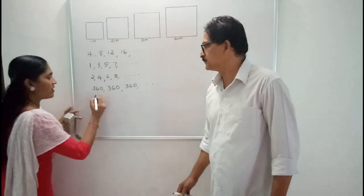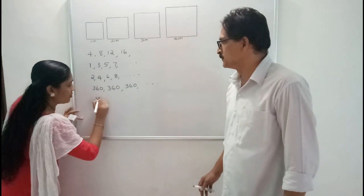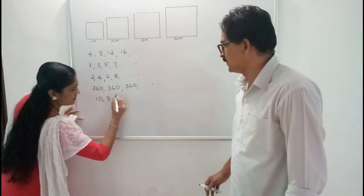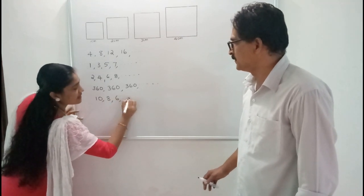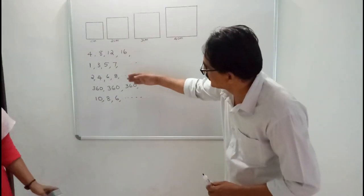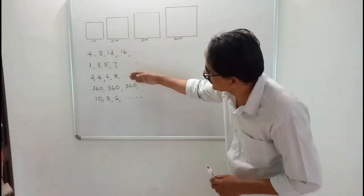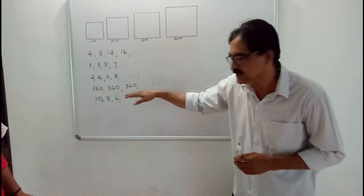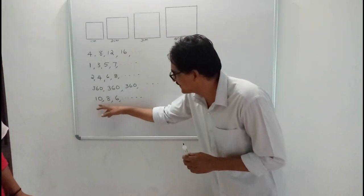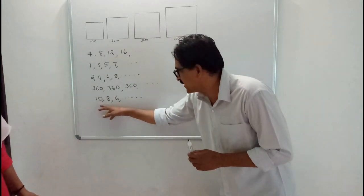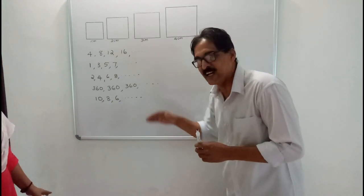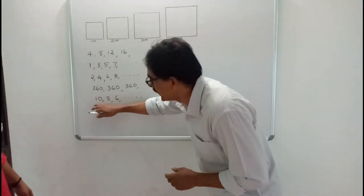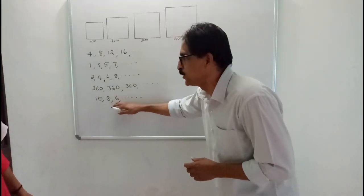We have studied increasing sequences — these are all increasing sequences. And this is a constant sequence. Whereas this one starts from 10. That is 10, 8, 6, etc. — 2 is decreased each time. So this is a decreasing sequence where 2 is subtracted repeatedly.